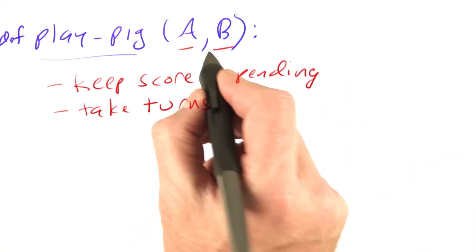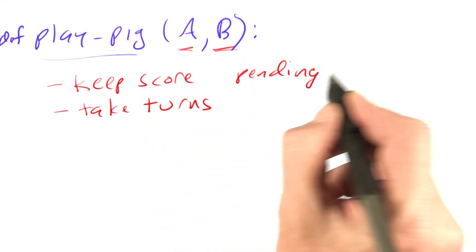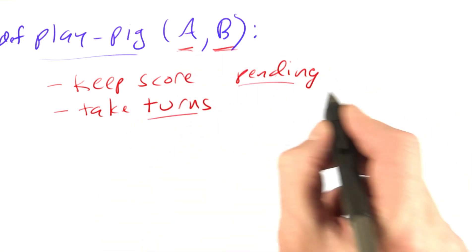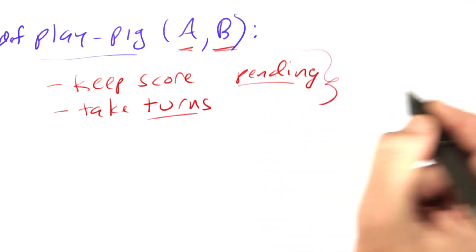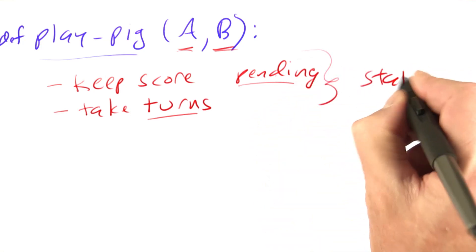Another way to say that is the score for A, the score for B, the pending, and whose turn it is, all of that is managing the current state.